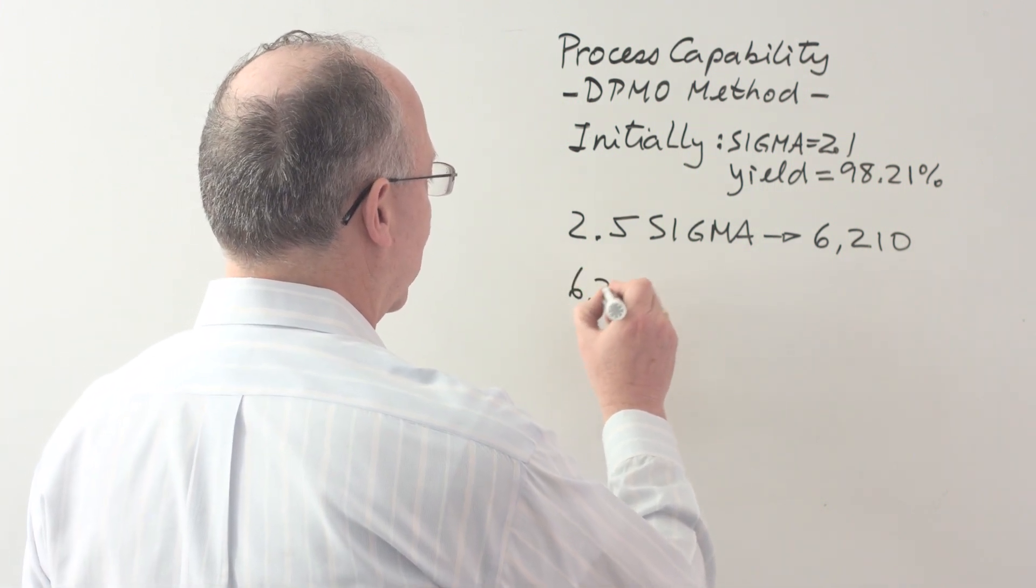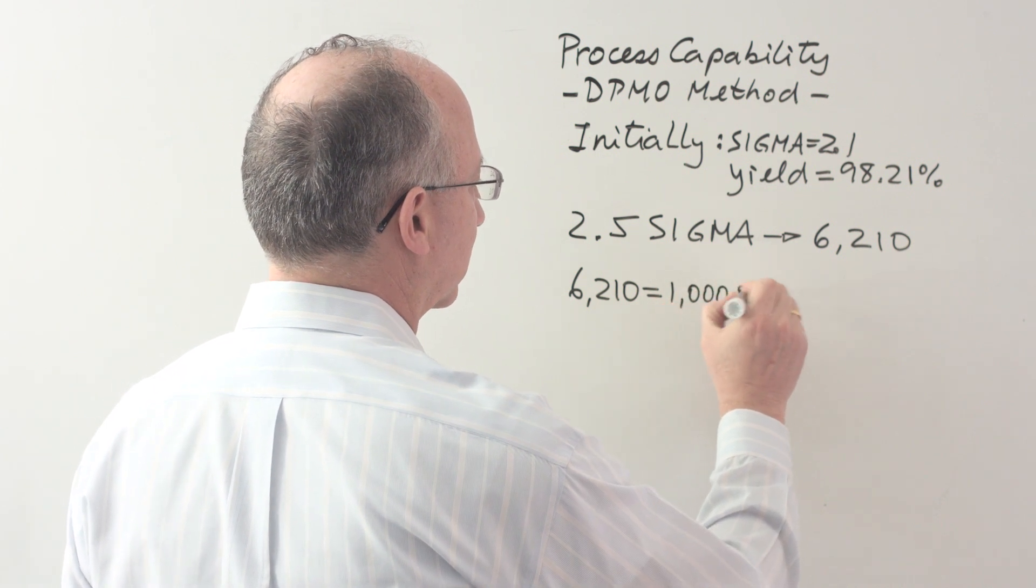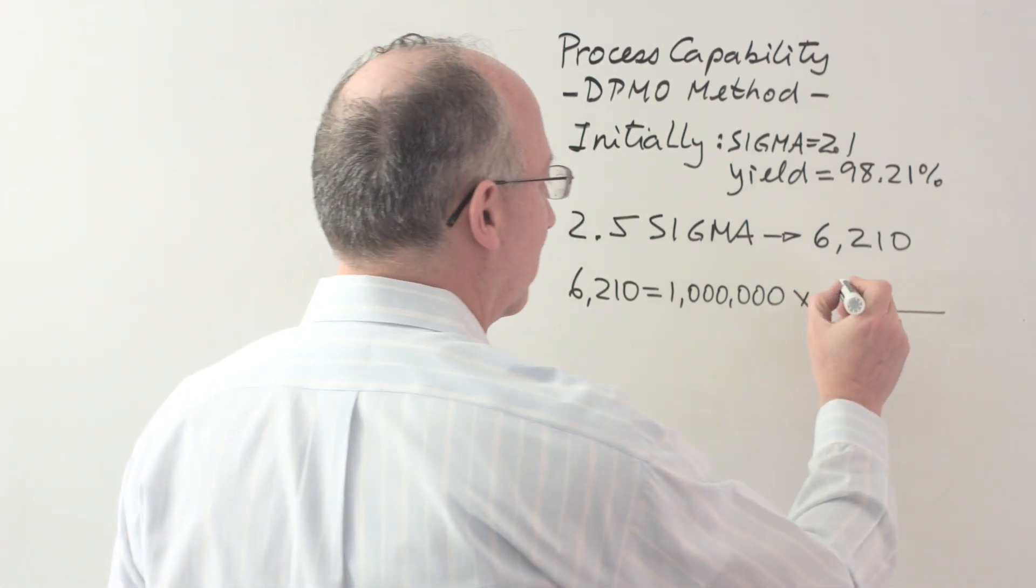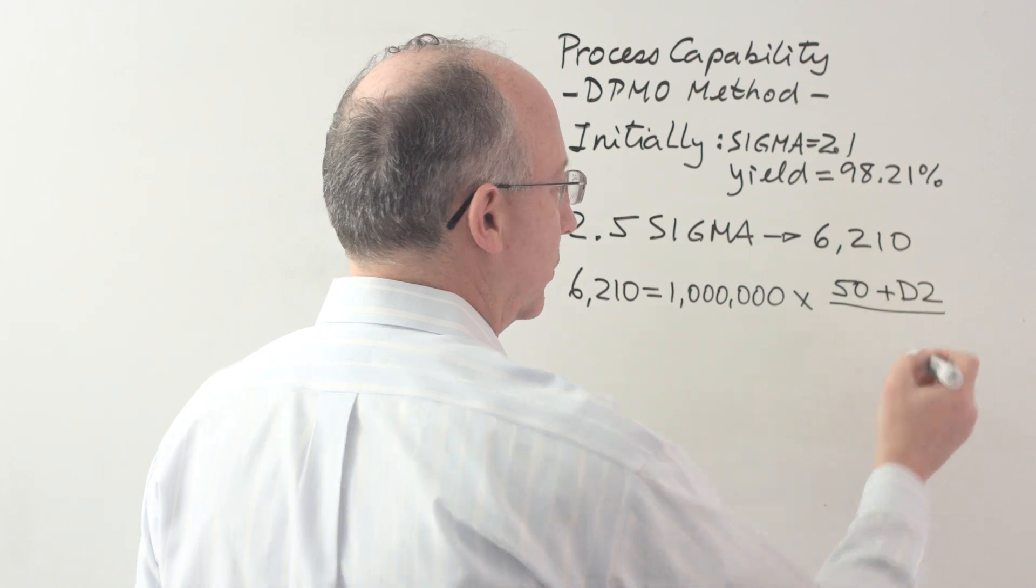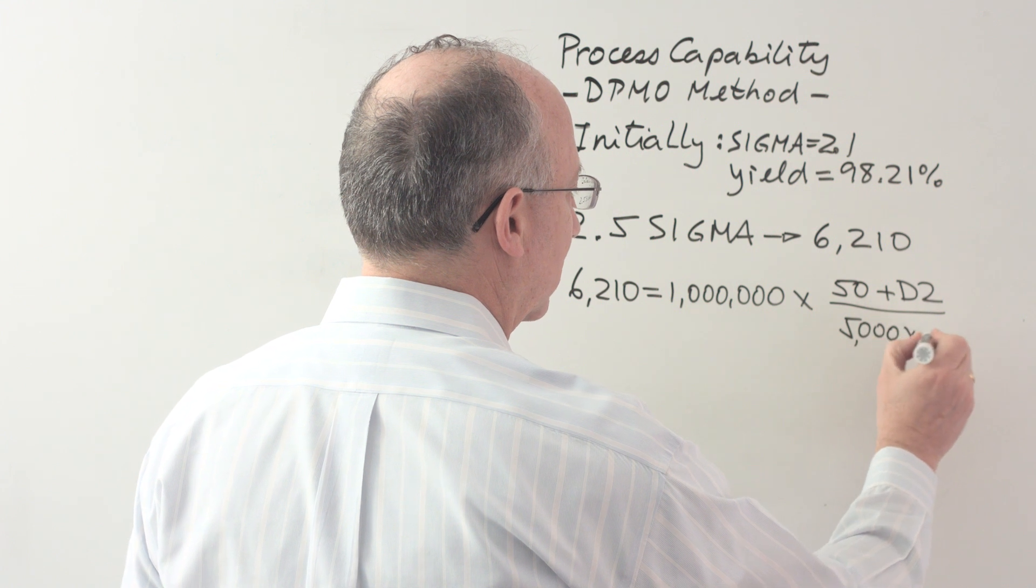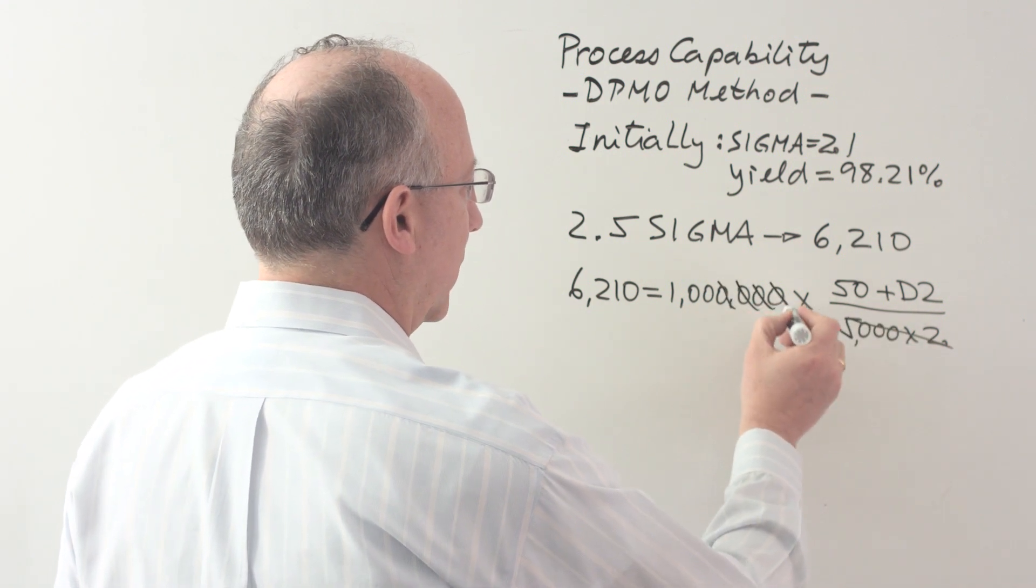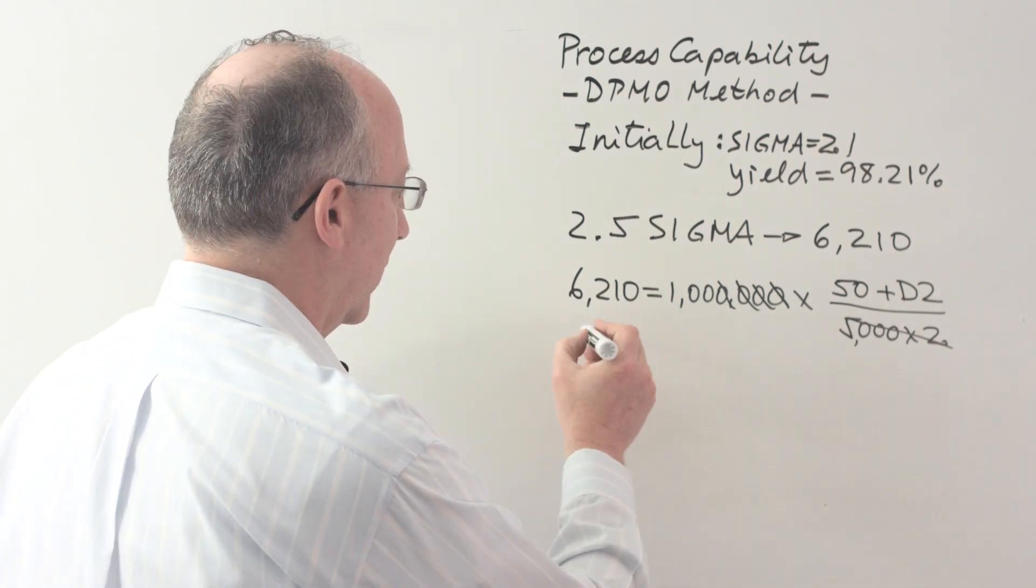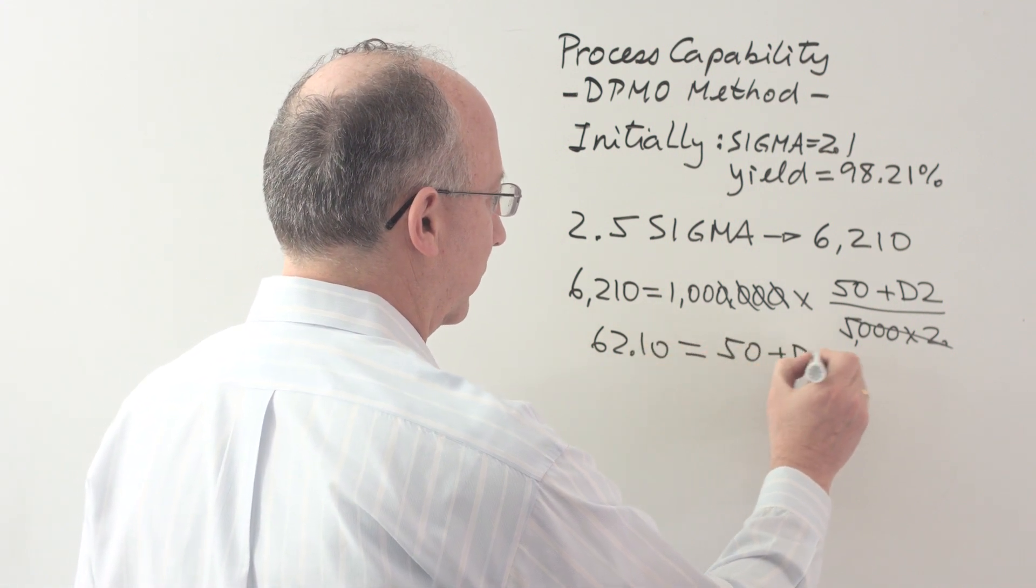What we have is that 6,210, which is a DPMO, is going to be equal to 1 million times the number of late deliveries, which would stay the same if we were to do exactly the same type of analysis, plus D2, which is the number of incomplete deliveries, divided by 5,000 times 2 again. One more time, we have here that this is 10,000, four zeros go, this is 100, 100 going, over here goes dividing, so we find that 62.10 is equal to 50 plus D2.